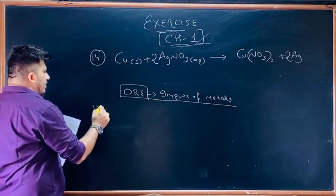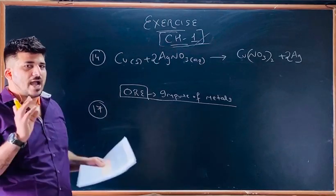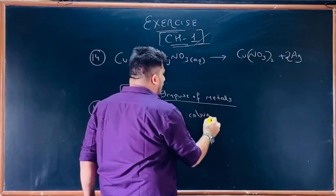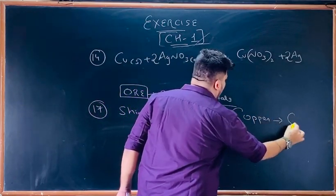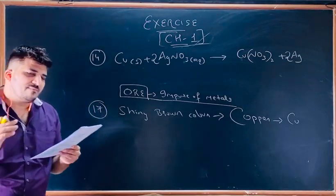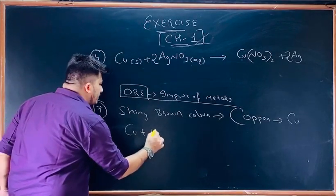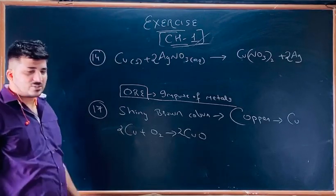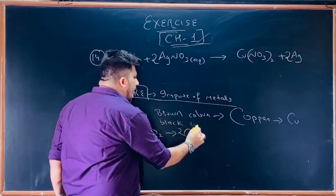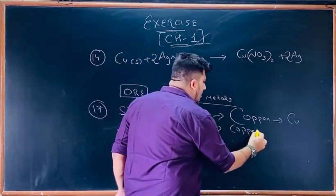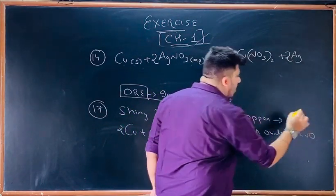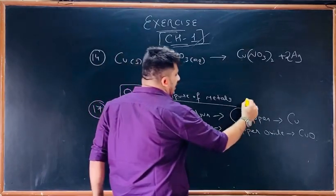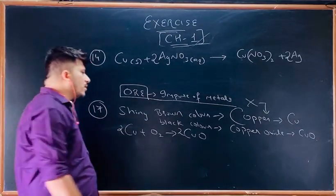Question 17: A shiny brown color element X — that is copper (Cu). On heating in air: 2Cu + O₂ → 2CuO. Copper oxide (CuO) is black in color. So the element X is copper, and the black compound formed on heating is copper oxide (CuO). This is an oxidation reaction — we have seen this as an oxidation-reduction type reaction.